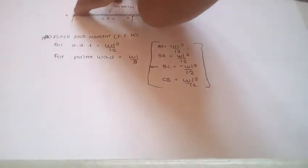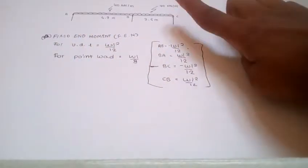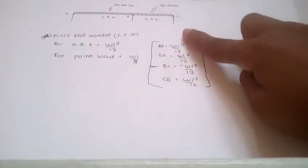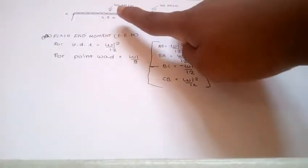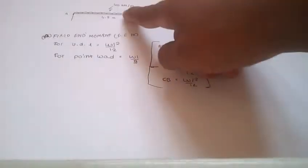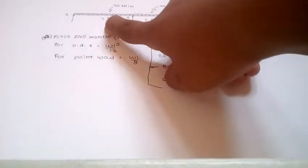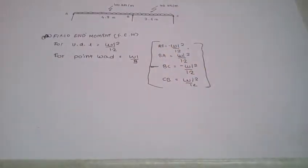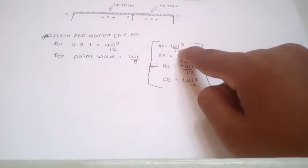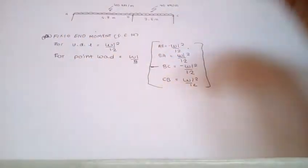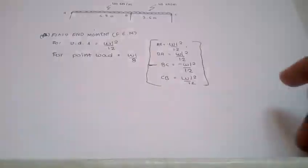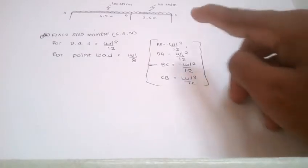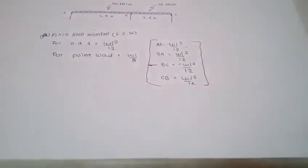This is left to right. You have to take a minus sign of WL squared by 12. This is UDL. We have a UDL load of 40 kN over 4.8m and 3.6m. So, AB is going to be minus WL squared by 12, and BA, this is right to left, is positive WL squared by 12. BC is minus WL squared by 12, and CB is right to left, so it's WL squared by 12. You have to solve it and get the answer of fixed end moments.